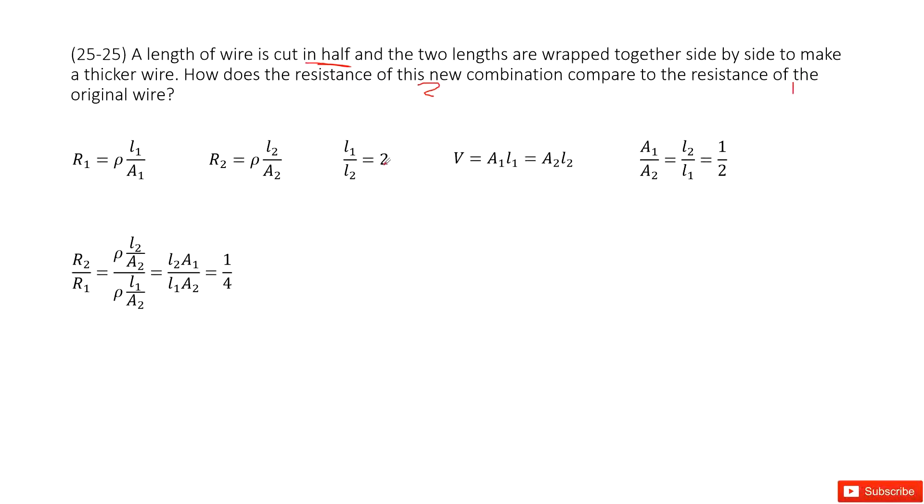And also, in this case, the volume is a constant, right? Because they cut in half and then put them together. So the volume is constant. So we make the cross-sectional areas A1 times L1 equal to A2 times L2. Do you agree? Yes.